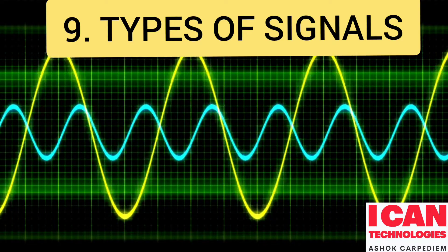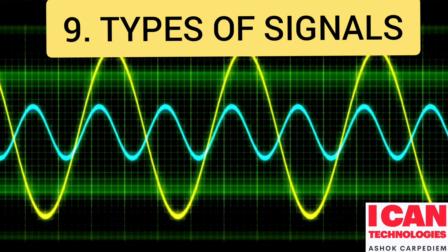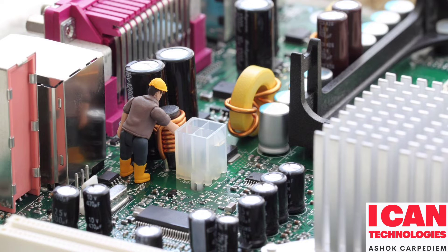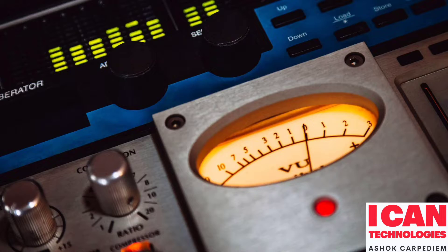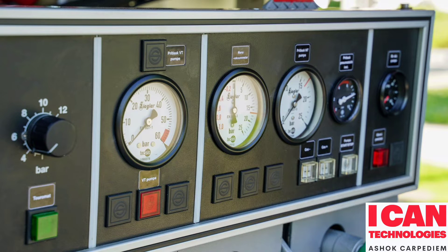Chapter 9 is Types of Signals. In every stage of technical studies, we have studied about signals — analog signals and digital signals. What these signals actually do, why we need them — all of this I am explaining in this chapter.